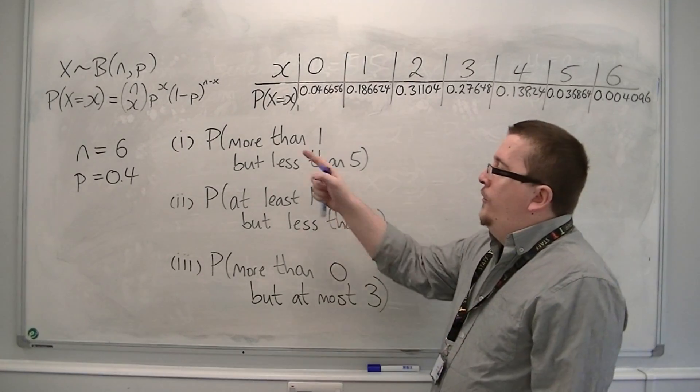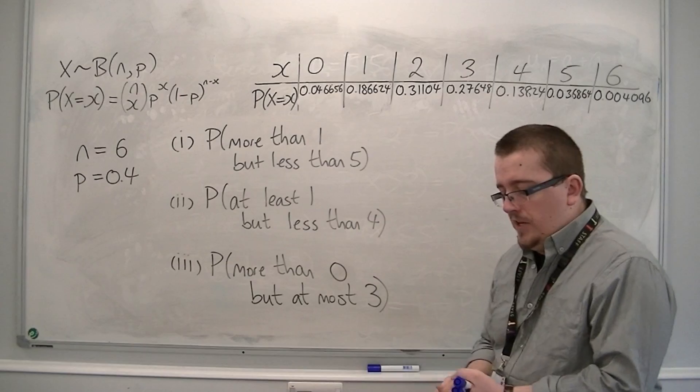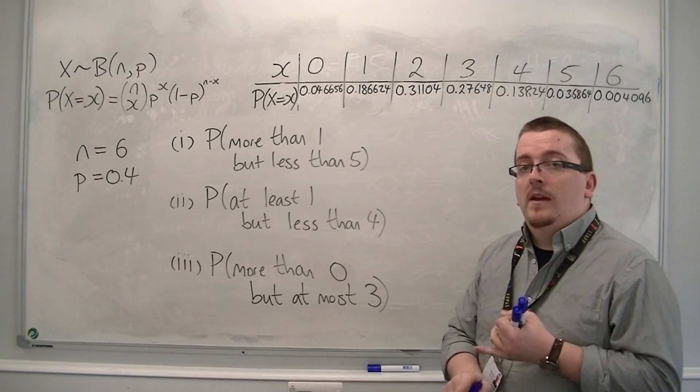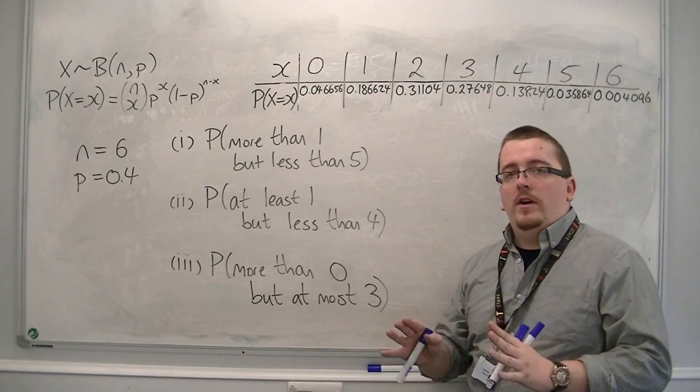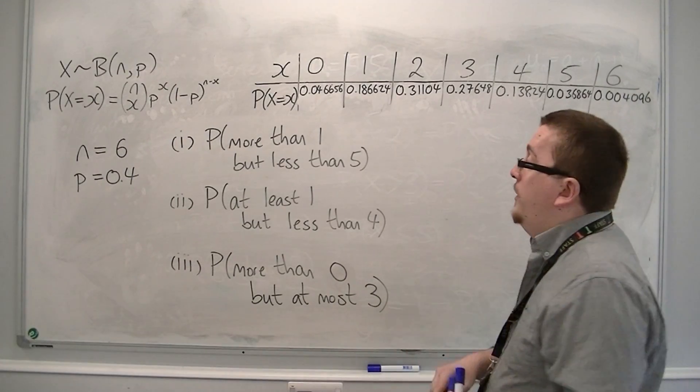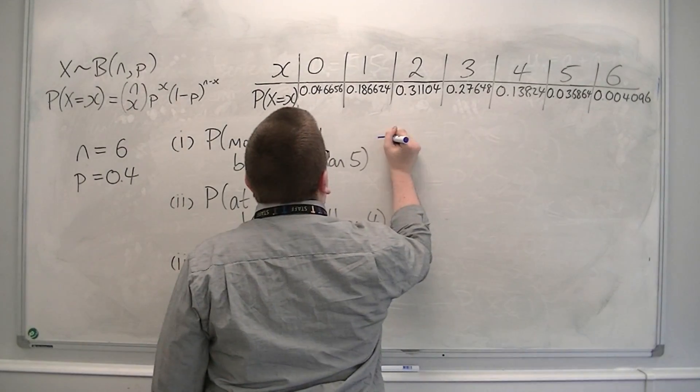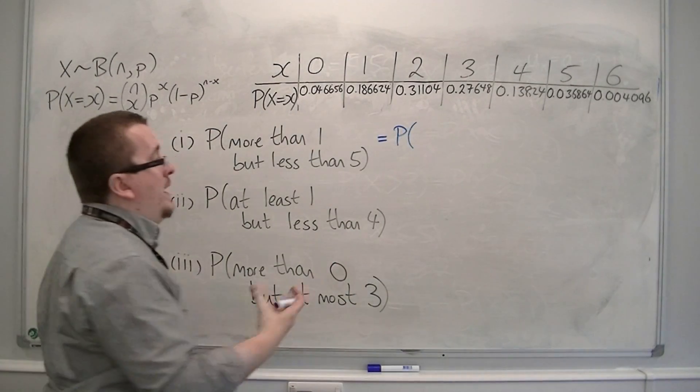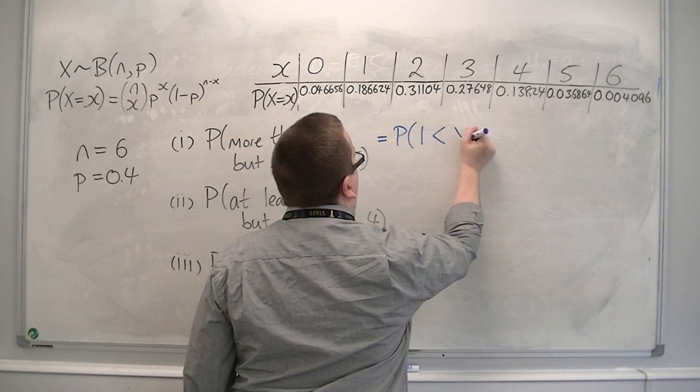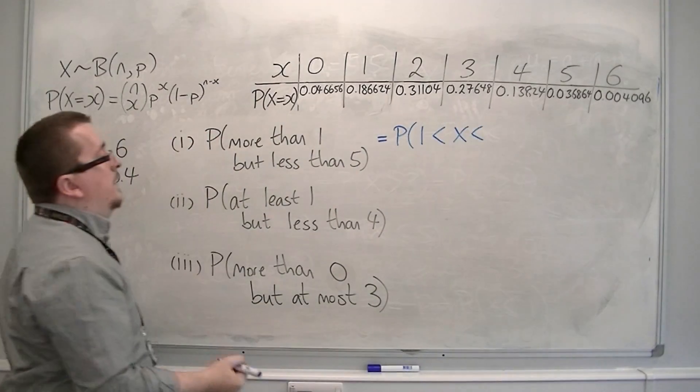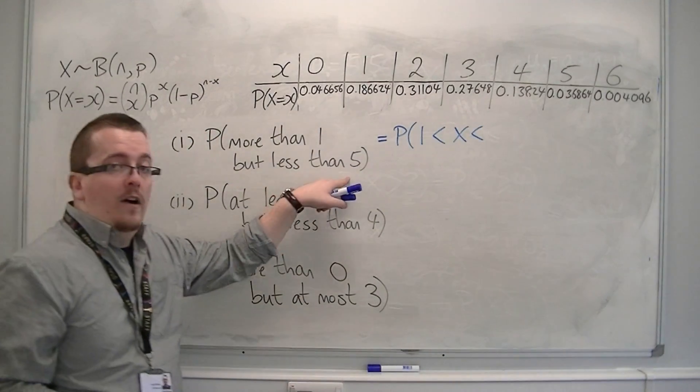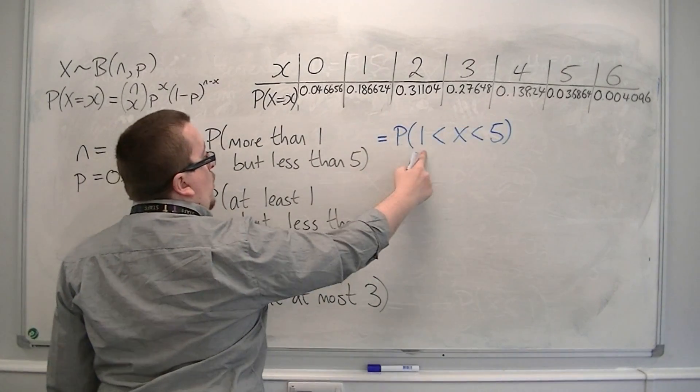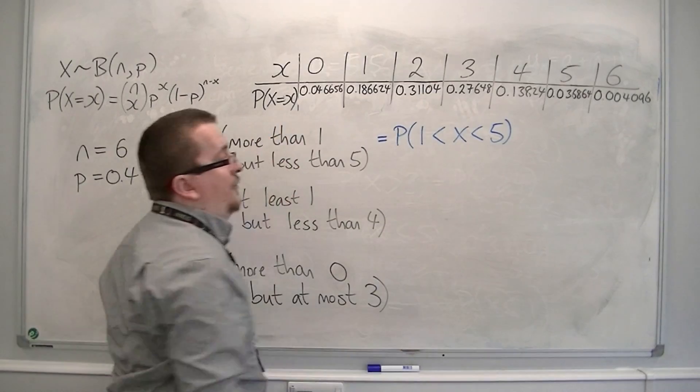So for this first one, we want the probability of getting more than one but less than five. Let's make sure we can write this as an inequality first. So this is equal to the probability of x being greater than one, so one is less than x is less than five. So this is the probability that x is more than one but less than five.